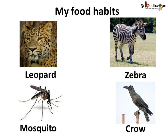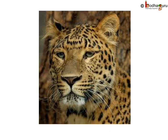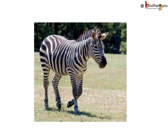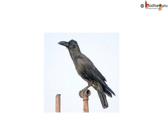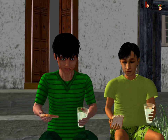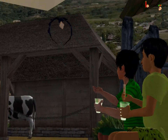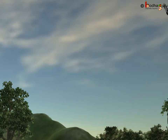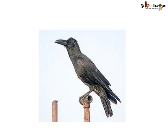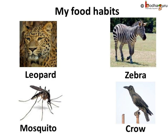Let us now classify these animals based on their food habits. A leopard is a meat-eater, hence it is a carnivorous animal. The zebra eats plants only, so it is a herbivorous animal. The mosquito is a parasite as it feeds on other animals. How about the crow? The crow eats both plants and other small animals, insects too. So it is an omnivorous animal.